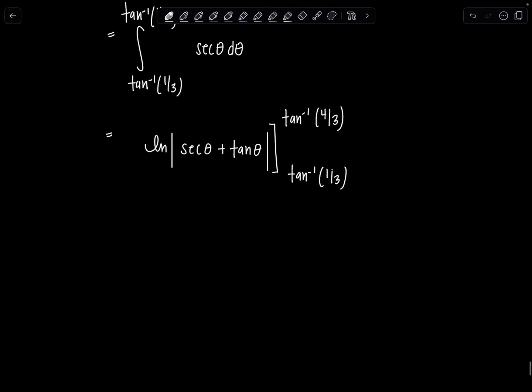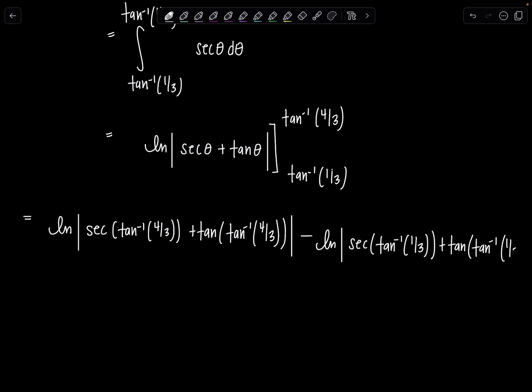Okay, we're almost there. So now we have natural log, absolute value, secant of tan inverse of 4 thirds plus tangent of tan inverse of 4 thirds, upper limit, minus, then I need to put the lower limit in. And then I need some space. Natural log, absolute value, secant of tan inverse of 1 third plus tangent of tan inverse of 1 third.